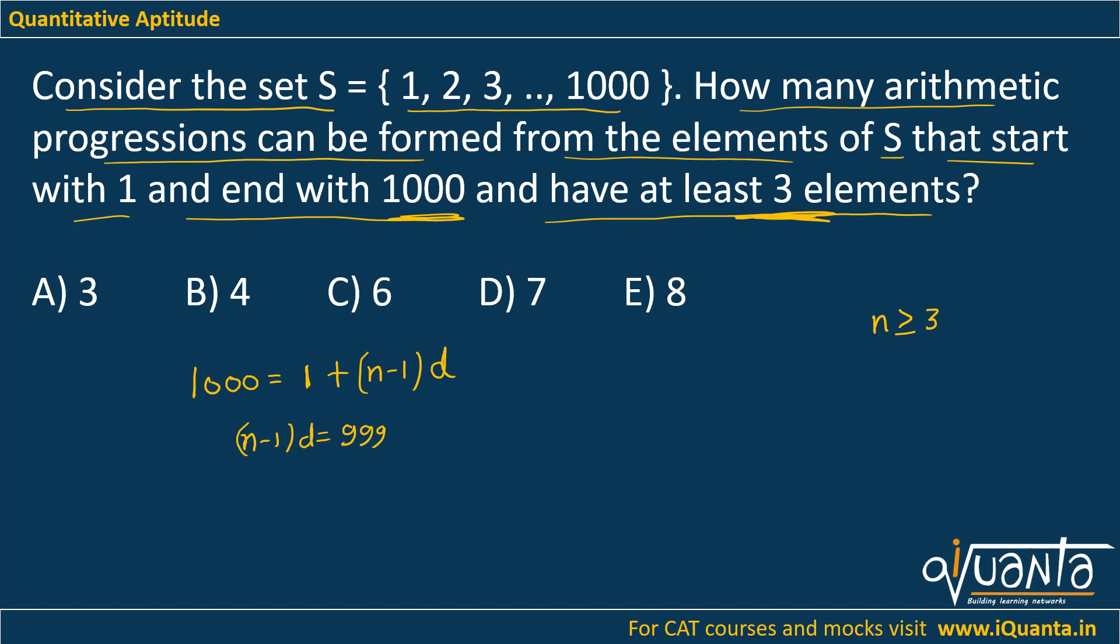Now all the APs that we are going to form should have the terms only present in this set S. So for example, if I take N equal to 3, I should get 2D equals 999, and D will be something in fractions or decimals.